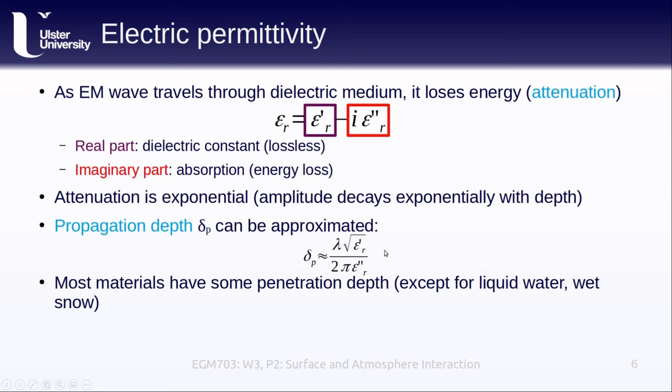For microwave remote sensing, most materials have at least some penetration depth, with the exception of liquid water and materials such as very wet snow. At the risk of spoiling things for you, it turns out that liquid water, which plays a massive role in the dielectric properties of a material, is extremely important in microwave remote sensing. A very small amount of liquid water on a surface can completely change how that surface appears using radar.